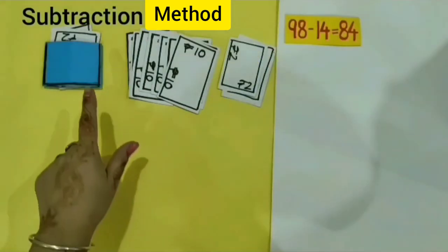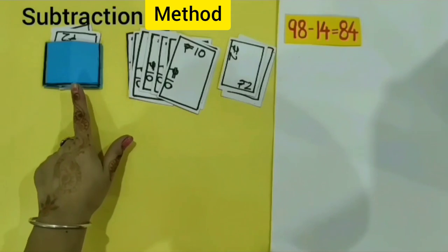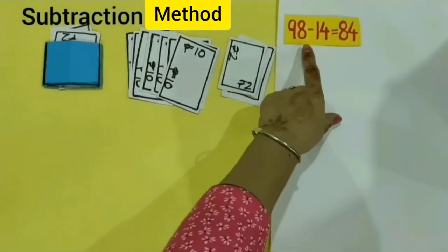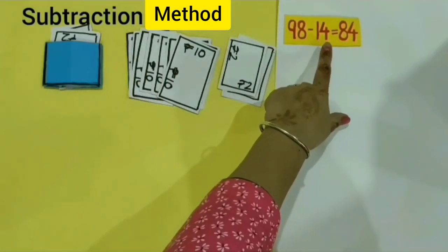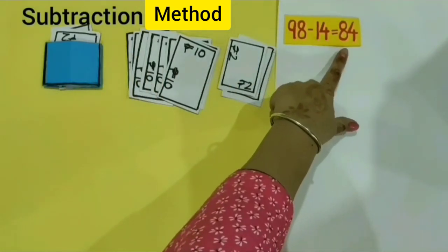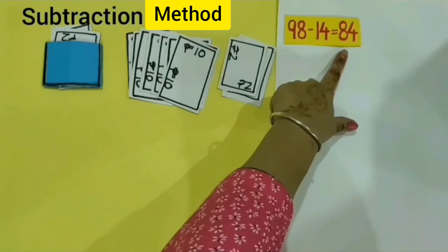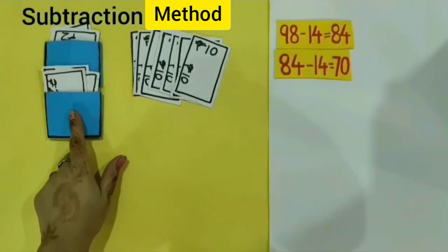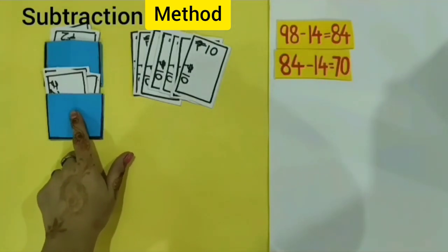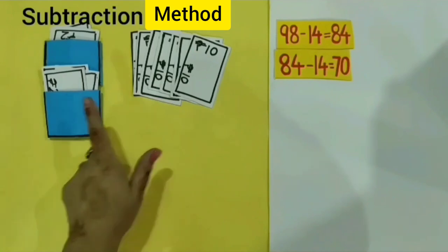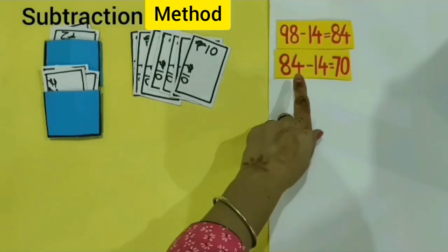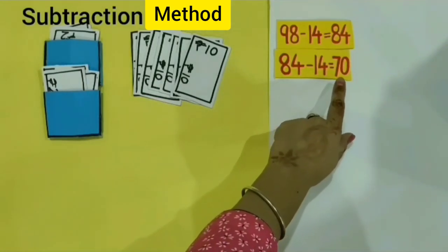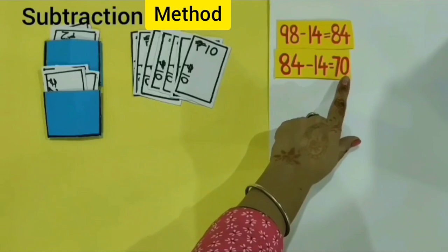I have put 14 rupees in the first card. How many rupees are left? 98 minus 14 is equal to 84. I have put 14 rupees in the second card. How many rupees are left? 84 minus 14 is equal to 70.